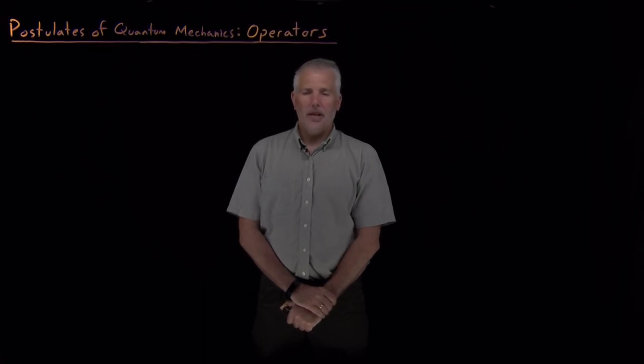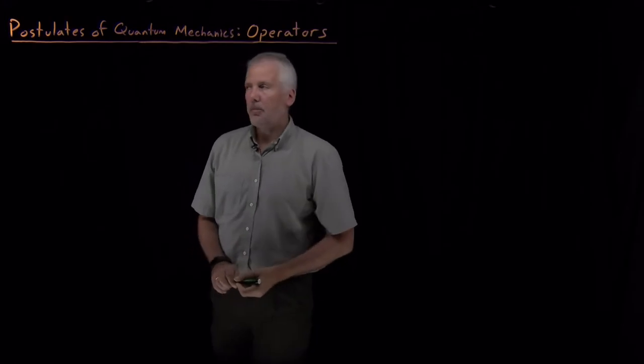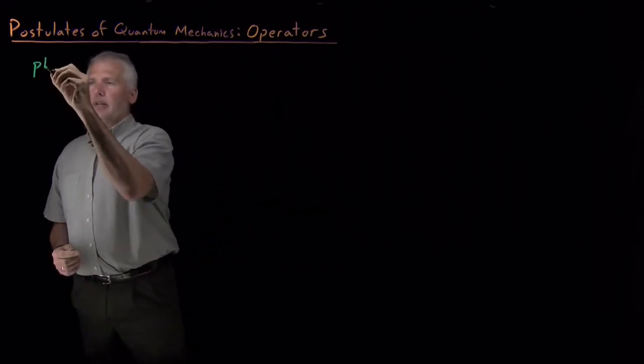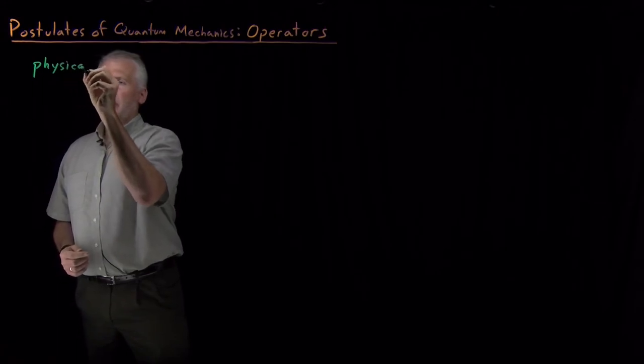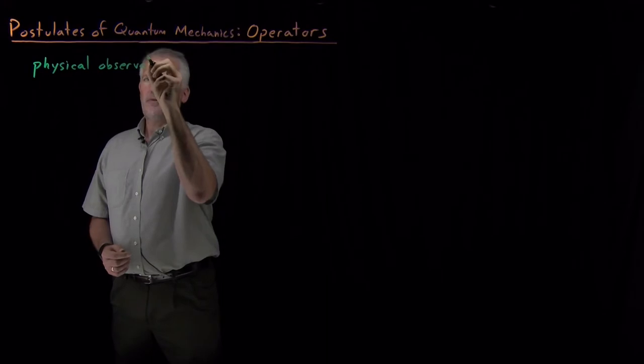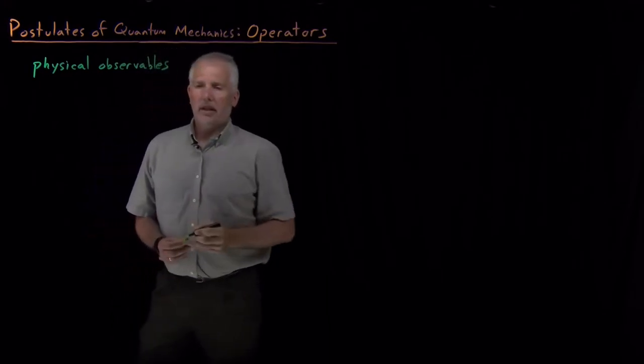So before we can understand how to do that, we should talk a little bit more about what these properties are that we can obtain from the wave function. And to do that, it's important to distinguish between properties that are what we call physical observables and those that aren't.